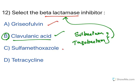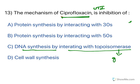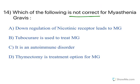The mechanism of action of ciprofloxacin: ciprofloxacin is used to treat urinary tract infections. It acts by inhibiting DNA synthesis of bacteria by interacting with topoisomerase, also known as bacterial DNA gyrase. This enzyme is responsible for DNA replication; when inhibited, DNA replication stops and cell death occurs. Option C — DNA synthesis inhibition by interaction with topoisomerase — is the right answer.